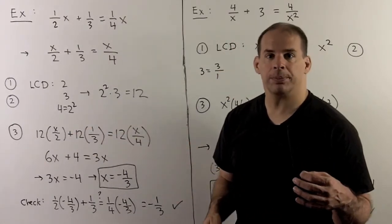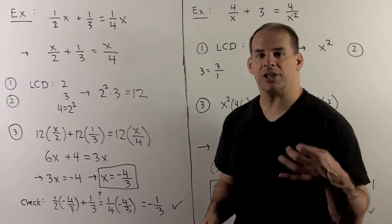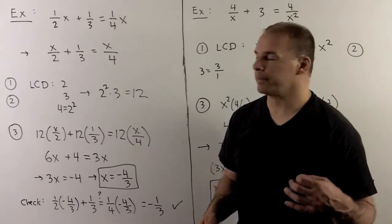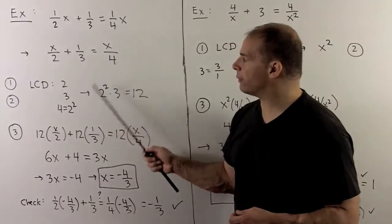We go to the checklist. First step, I'm going to factor each denominator. Second step, we find the least common denominator. We have 2, 3, and 4.